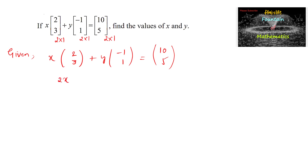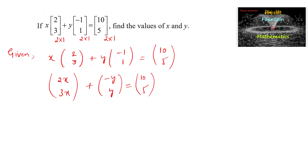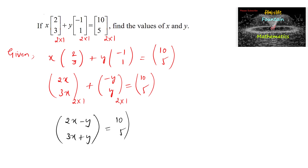On simplifying, x is multiplied to each element of the matrix: x×2 and x×3, giving 2x and 3x. Then y is multiplied to each element: y×(−1) = −y, and y×1 = y. Since both matrices are of order 2 by 1, we can add them: [2x − y, 3x + y] = [10, 5].